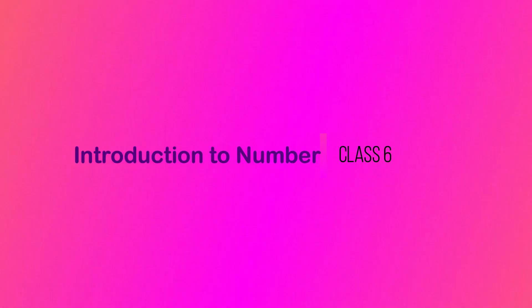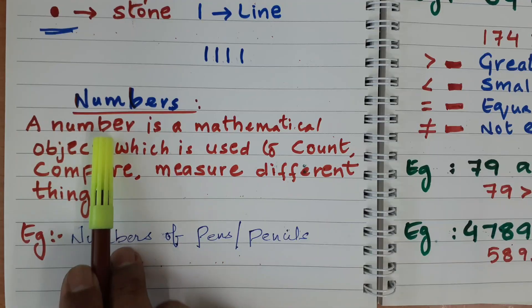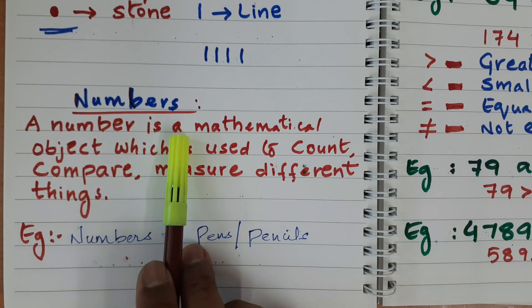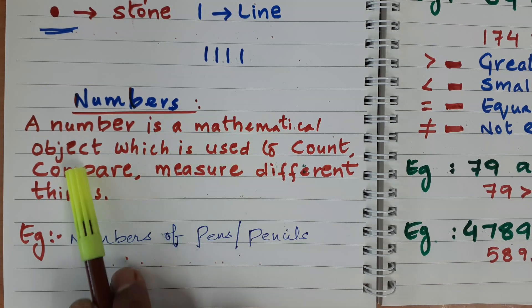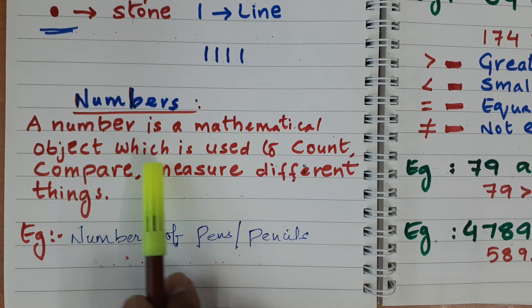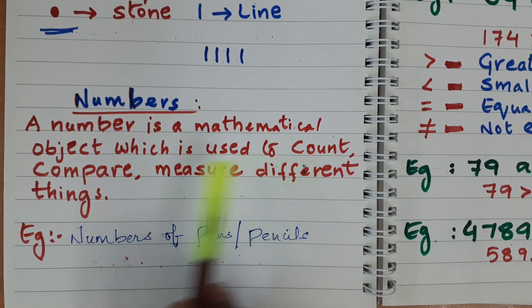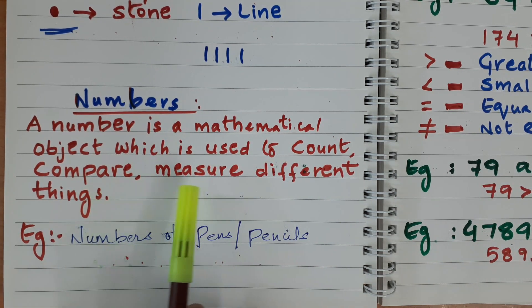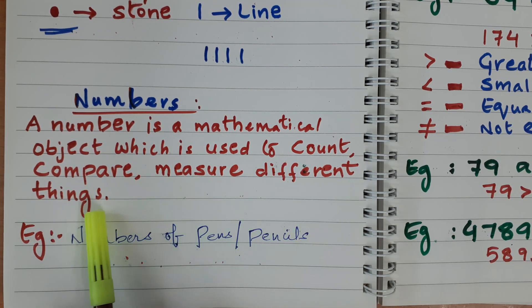Students, let us see what actually a number is. A number is a mathematical object which is used to count, compare, measure different things.